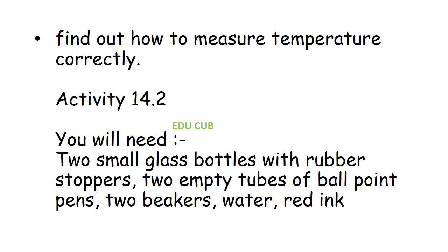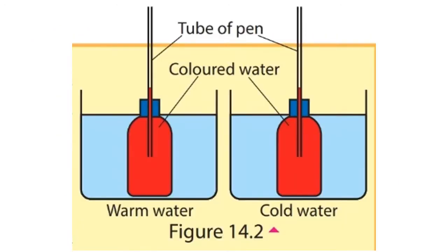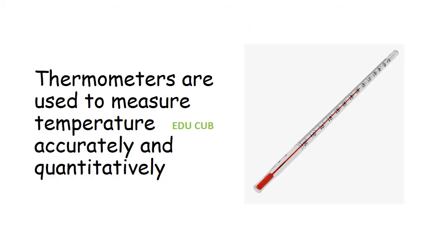We have to do another activity to find out how to measure temperature correctly. We need two small glass bottles with rubber stoppers, two empty tubes of ballpoint pens, two beakers, water, and red ink. You have to fill the small glass bottles with colored water and fix the empty tubes of the ballpoint pens into them. Keep one of those bottles in a beaker filled with warm water and the other in a beaker filled with cold water. Let's see what will happen.